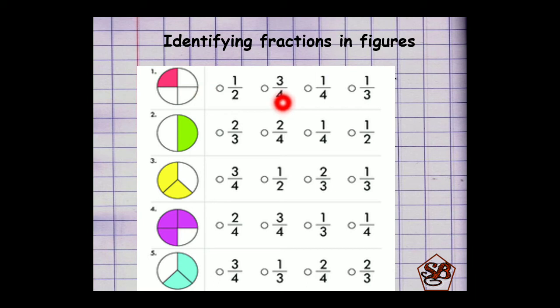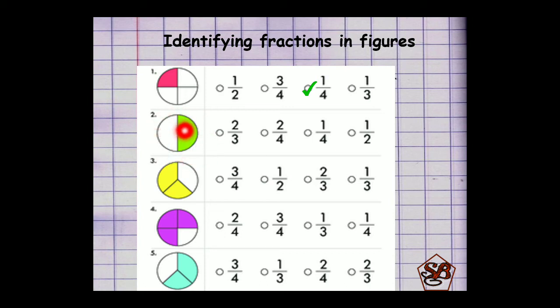Numerator 1 and denominator 4, so the correct option is 1 by 4. Coming to the next figure, this figure is divided into 2 equal parts and out of that 1 is shaded. That means the numerator should be 1 and denominator should be 2, so the correct fraction would be 1 by 2.